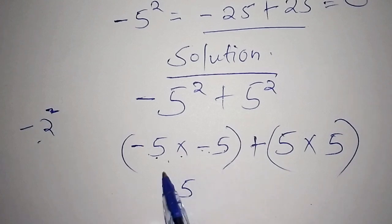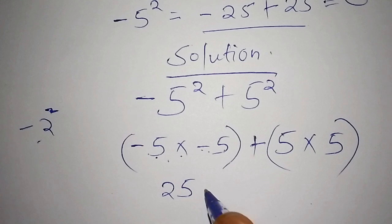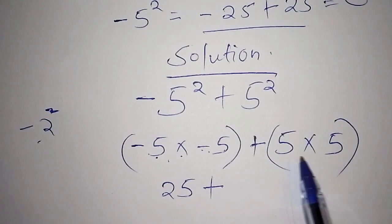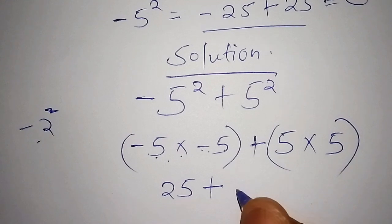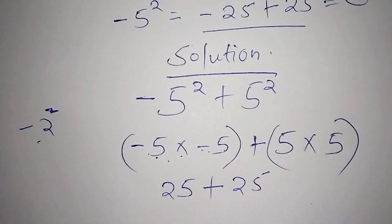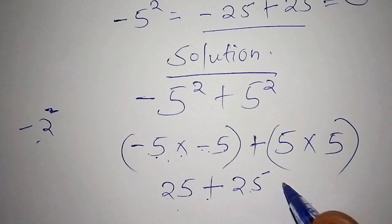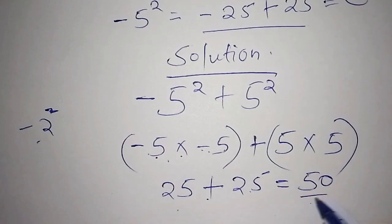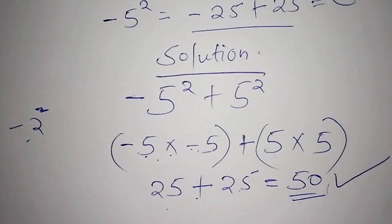So minus 5 multiply by minus 5 becomes positive 25. Plus, let's also open this bracket, 5 multiply by 5 becomes 25. Once we've reached here we just put 25 plus 25, and what is 25 plus 25? It is just like 25 multiply by 2, and the answer now becomes 50.